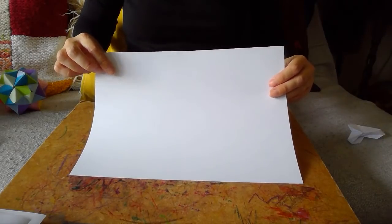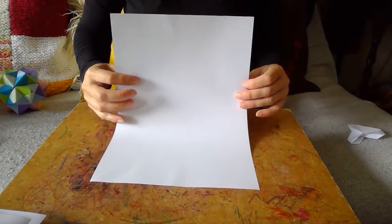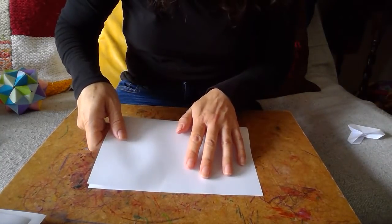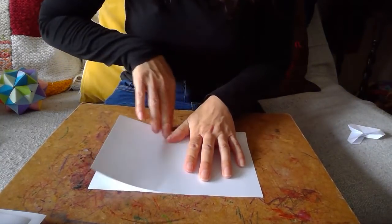So first of all I've got an A4 sheet of paper. I'm going to turn it first of all into A5 paper. So I'm simply going to fold it in half to make A5 like so.